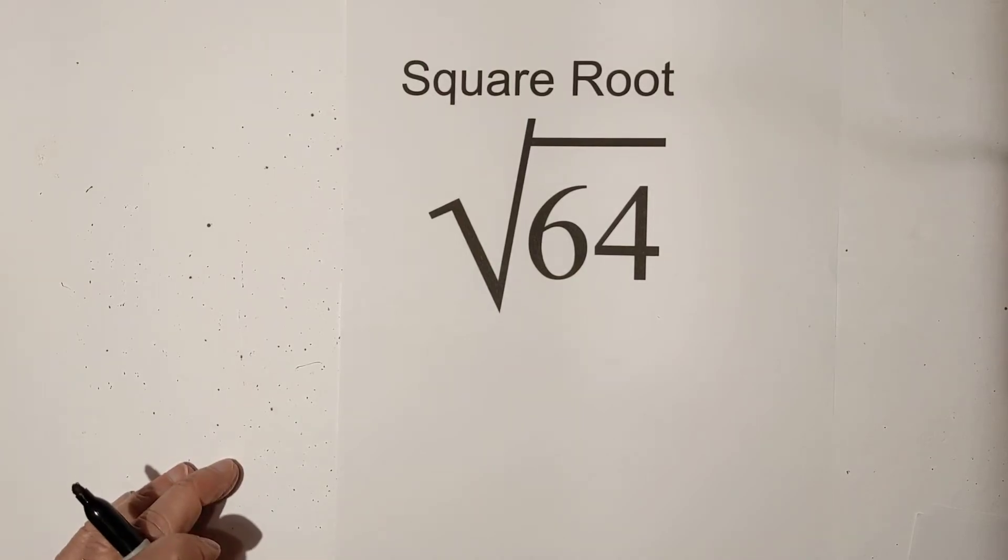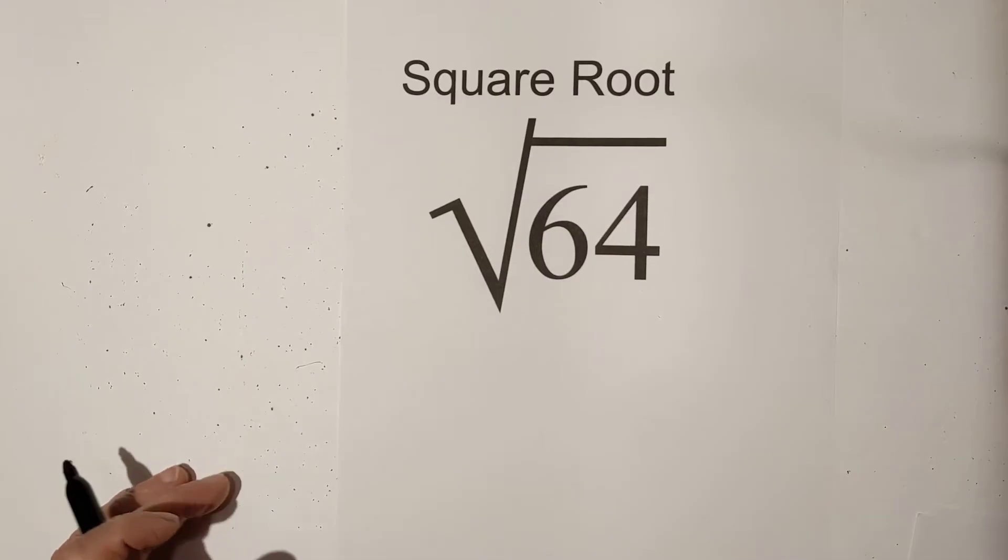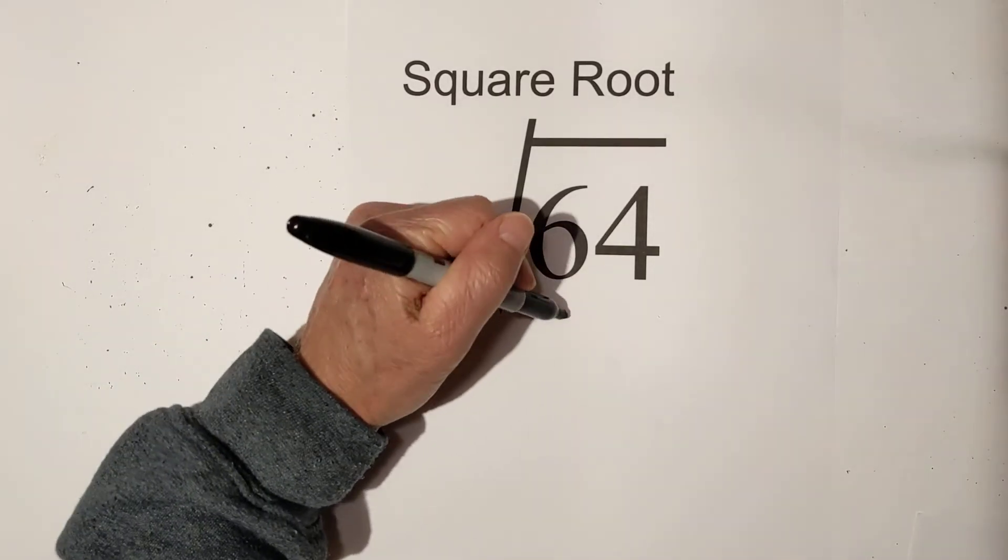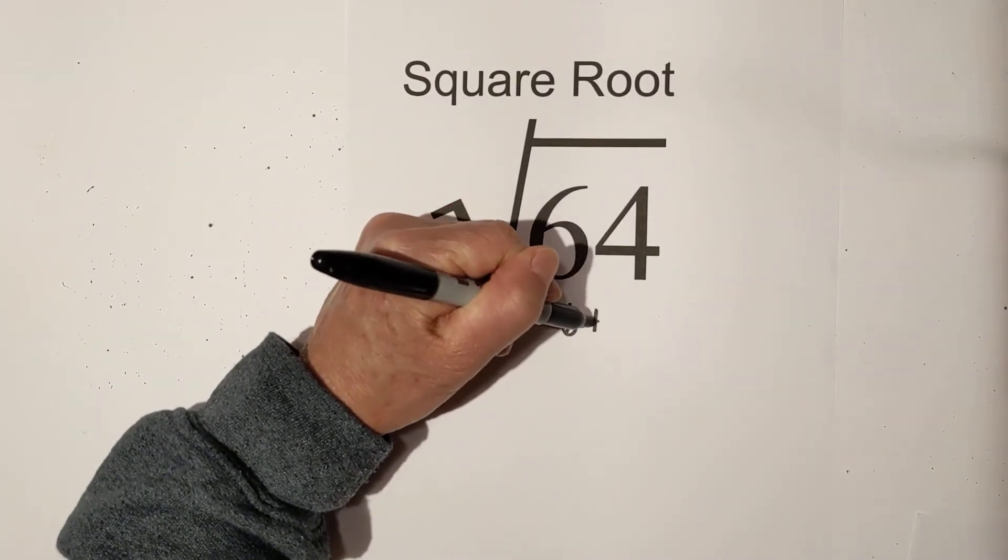Welcome to Moo Moo Math and Science. Let's find the square root of 64. I like to use a factor tree. So the first thing I'm going to do is create a factor tree for 64.